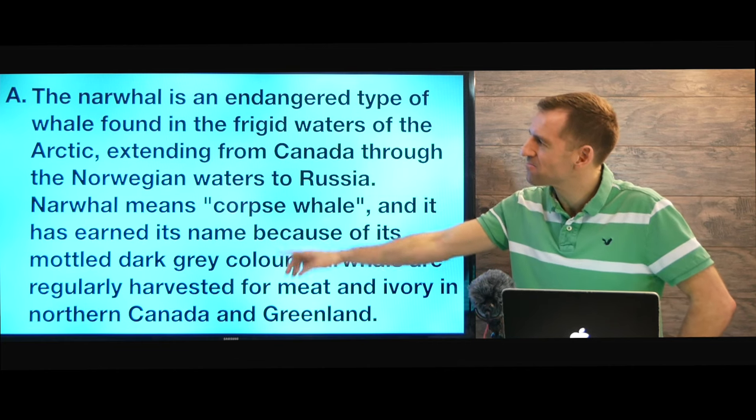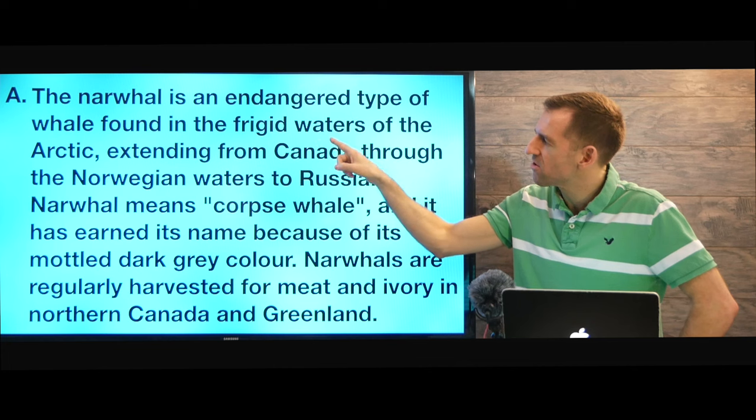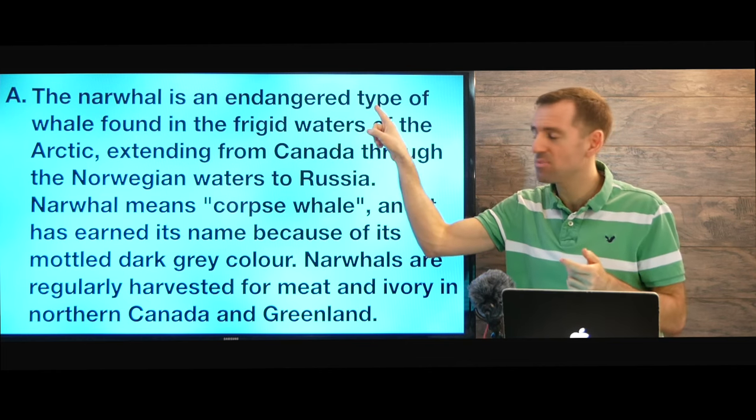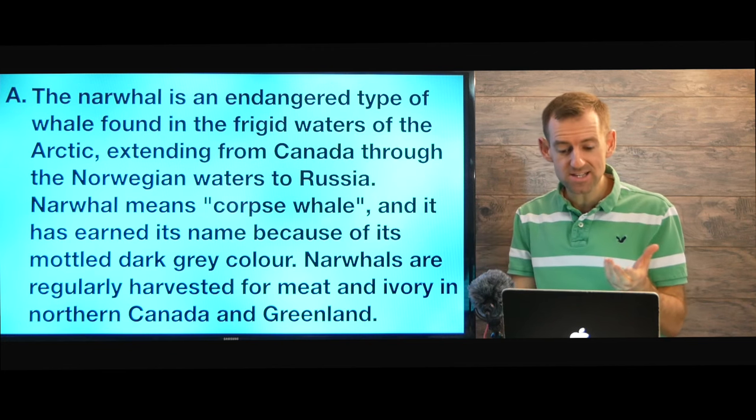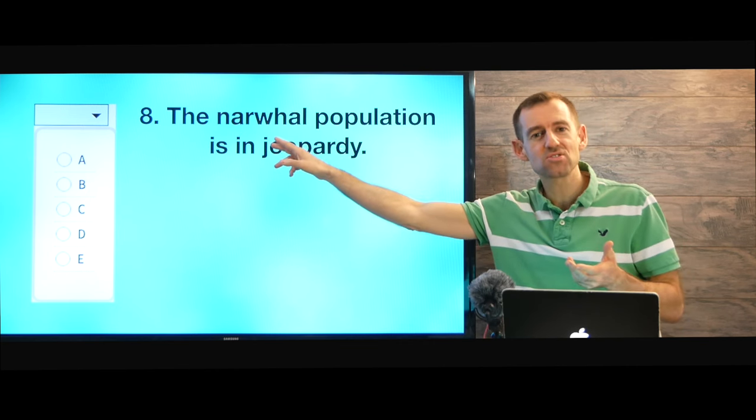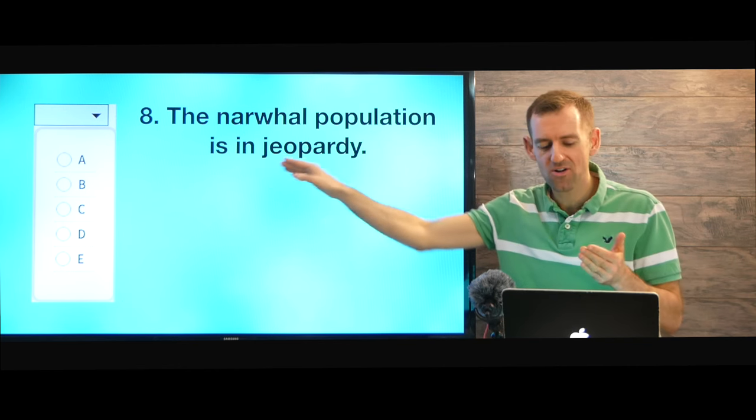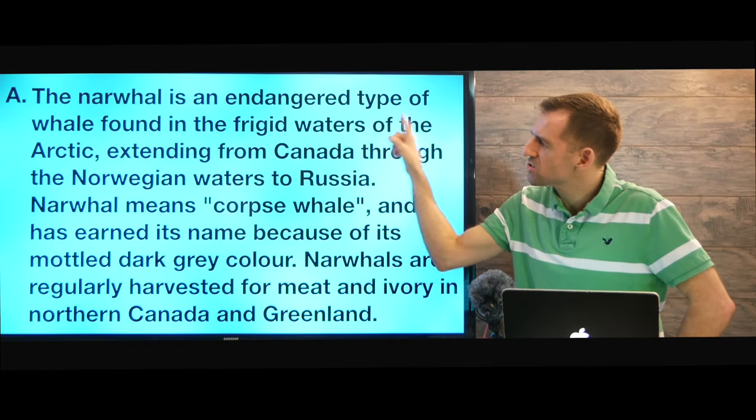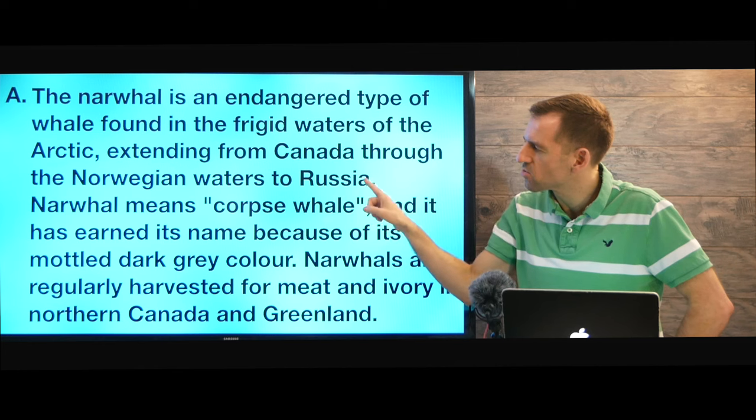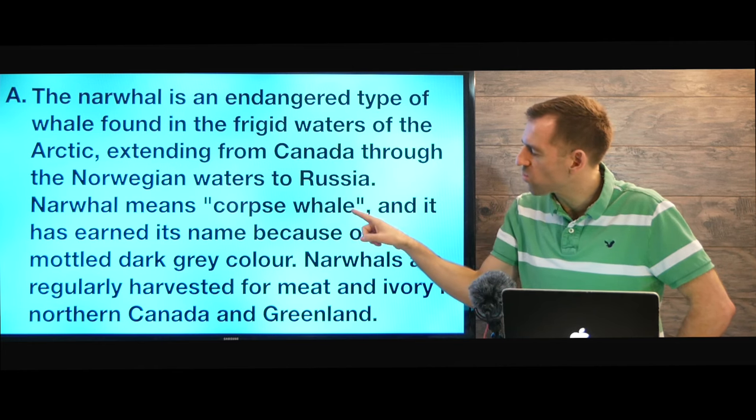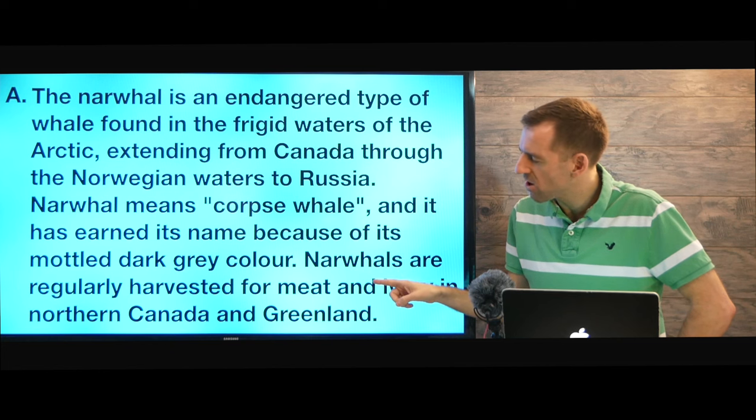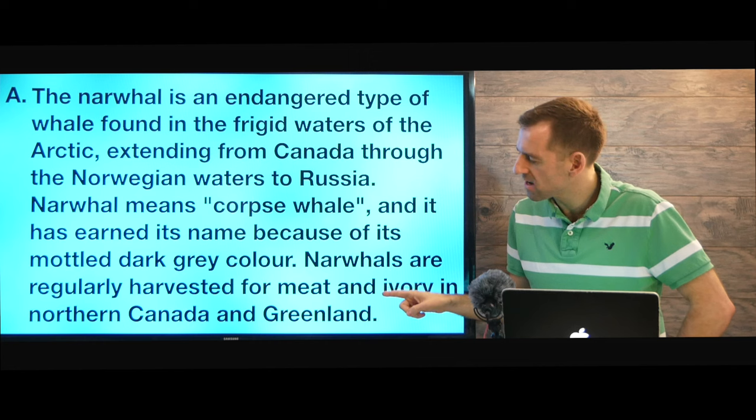Okay so here is paragraph A. The narwhal is an endangered type of whale found in the... Okay we can stop reading right there. We already have one of our answers. Okay endangered type of whale. What does endangered mean? That means at risk. The narwhal population is in jeopardy. Okay so we already have the answer to to question eight and so we pick A. Paragraph A. Okay so then we keep reading. Endangered type of whale found in the frigid waters of the arctic extending from Canada through the Norwegian waters to Russia. Narwhal means corpse whale and it has earned its name because of its mottled dark gray color. Narwhals are regularly harvested for meat and ivory in northern Canada and Greenland.